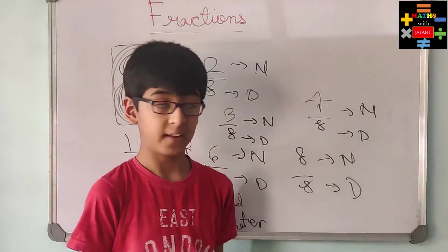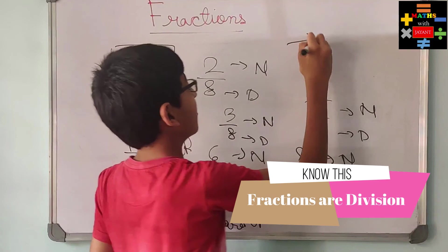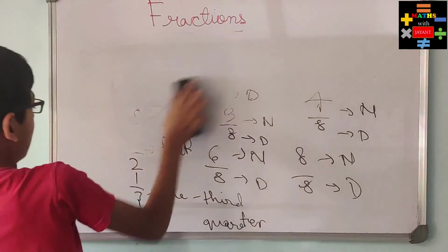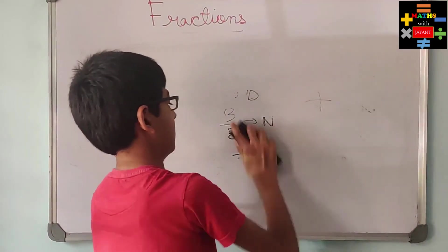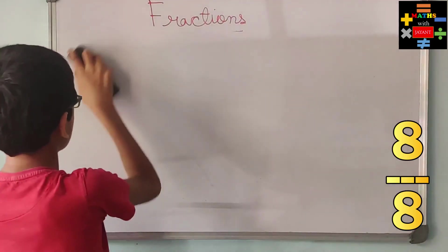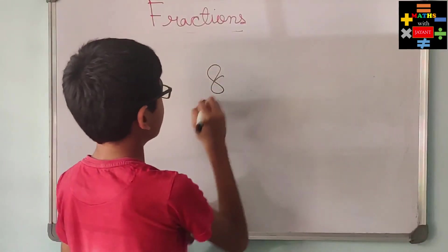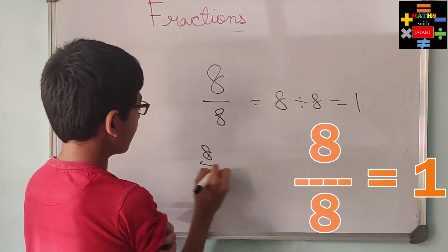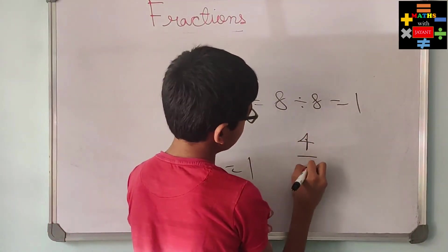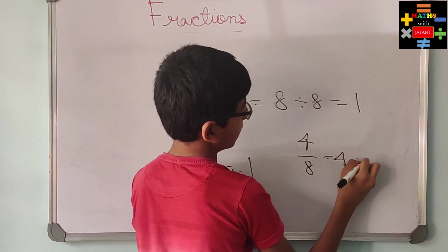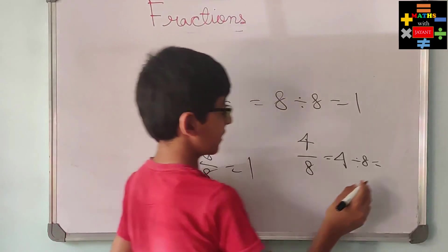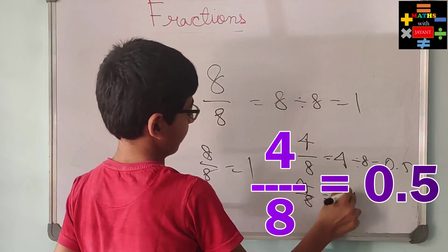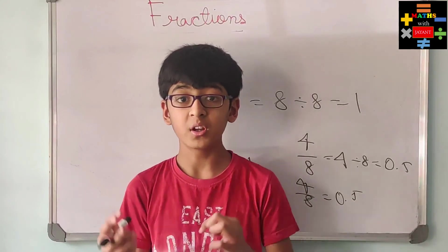Now one more important point: fractions are division — it's another way of writing division. Suppose if I take eight by eight: that is eight divided by eight, and eight divided by eight is one. So eight by eight is the same as one. Now if you do four by eight, that is four divided by eight, and you will get the decimal number 0.5. So fractions are another way of showing division.